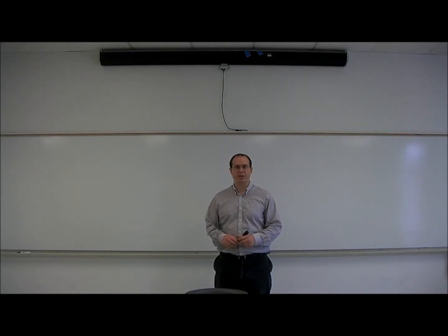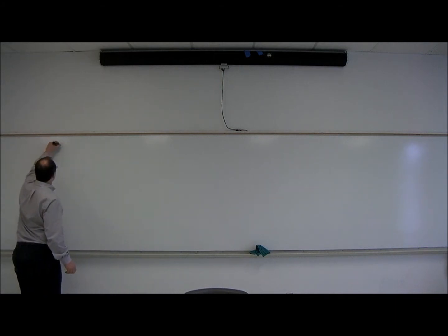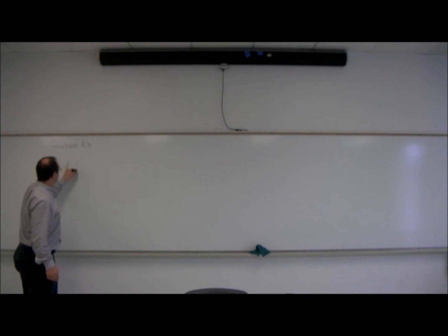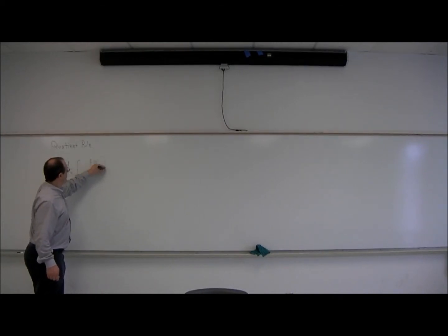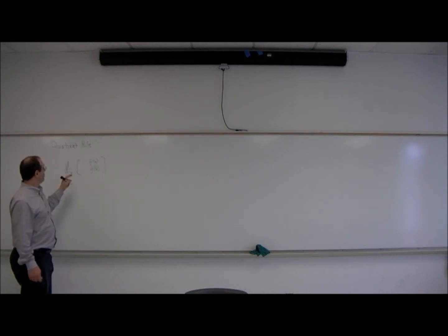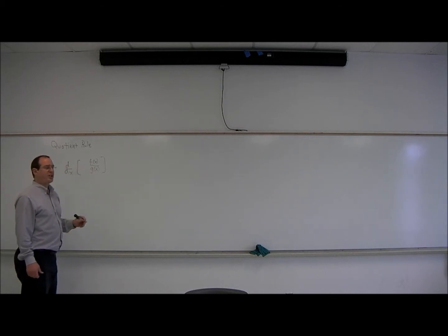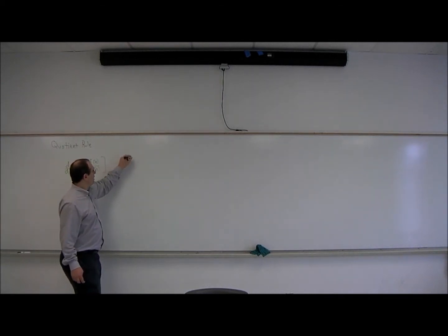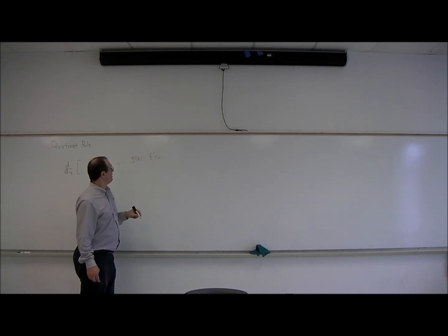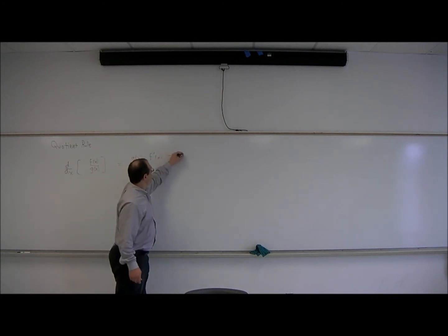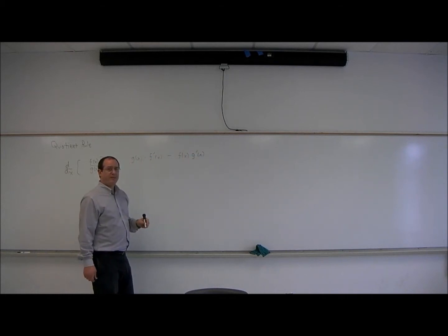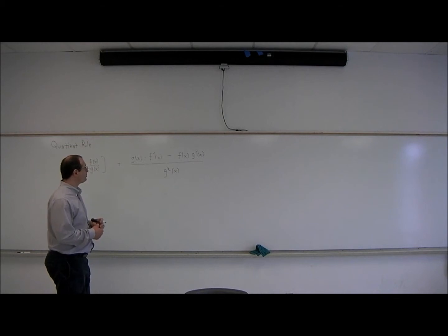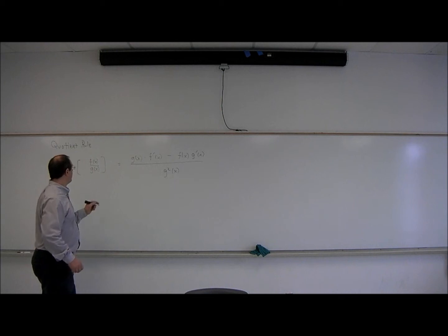Hi, I'm Dr. Incognito. In this video, we're going to discuss the quotient rule for finding derivatives. We want to be able to take the derivative of a function of the form f(x) over g(x) — a quotient. The rule goes like this: the derivative of the quotient is the bottom function times the derivative of the top function, minus the top function times the derivative of the bottom function, divided by the bottom function squared. So there's the formula. Let's look at a few examples and see how it works.